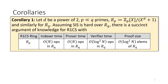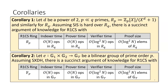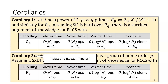Our first corollary is the lattice-based succinct argument from the title of the talk. We get this by instantiating all the bilinear modules with rings under lattice assumptions like ring-SIS. Under a different instantiation based on bilinear pairings, we get a pairing-based argument which inherits the same efficiency properties. In some sense, we captured the essence of prior protocols like DORY using our bilinear module abstraction.